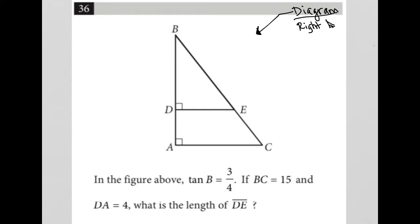What do we know about this right triangle? The question says, in the figure above, tan B equals three-fourths. Let's think about what does that mean. What does it mean if the tangent of B is equal to three over four?